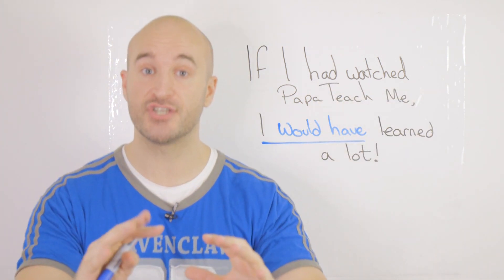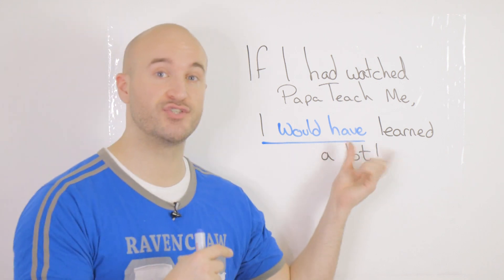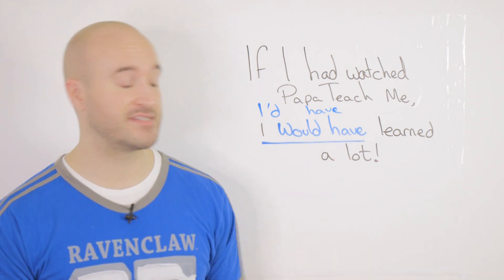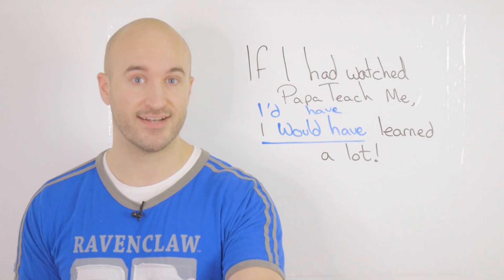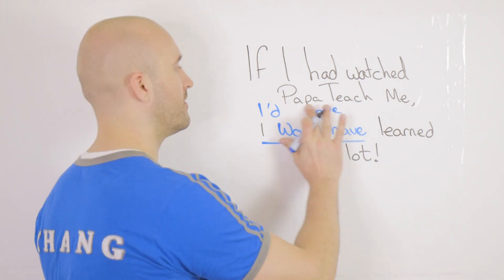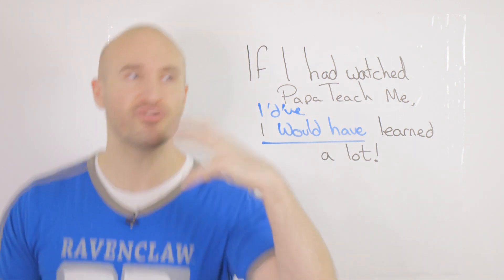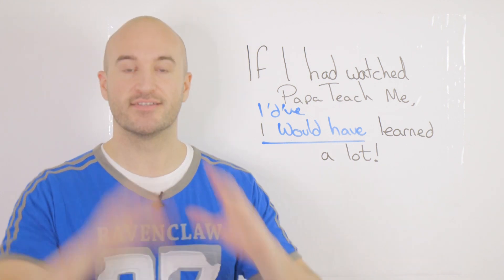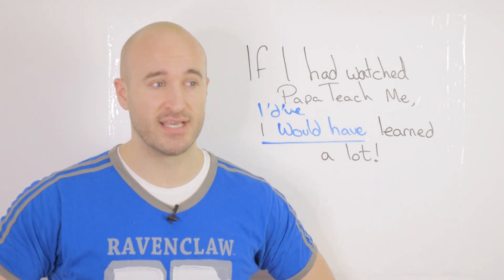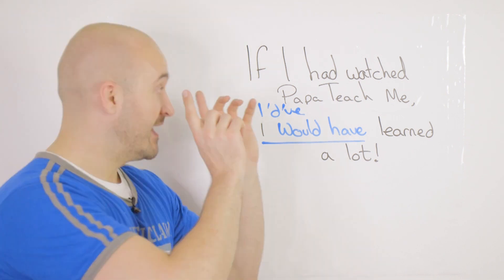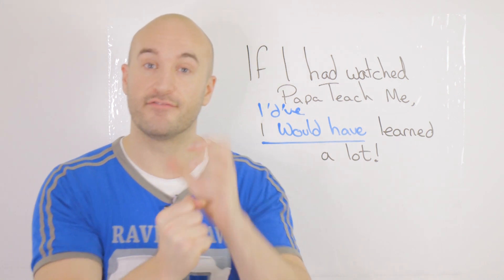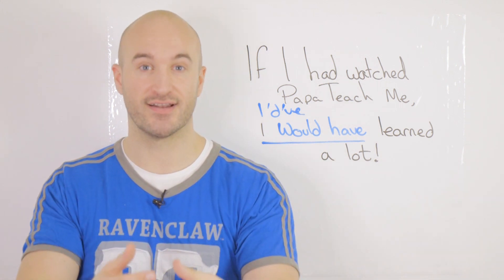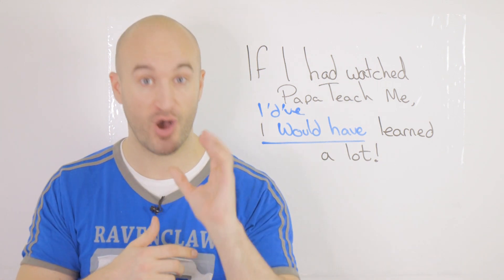In conversation when you're speaking quickly, how do you reduce 'I would have'? First to 'I'd have' — 'If I had watched Papa Teach Me, I'd have learned a lot.' But we can reduce it even more: 'I'd have' — say it with me: 'If I'd watched Papa Teach Me, I'd have learned a lot.' These reductions are for spoken English — more specifically, quick spoken English and casual conversations only.